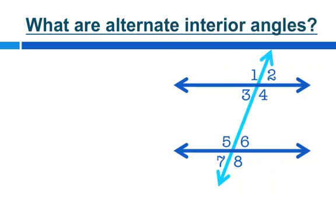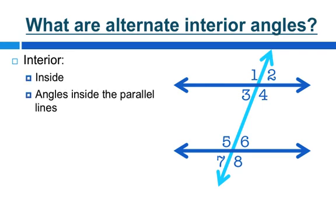So first of all, what are alternate interior angles? Let's break that down into different parts of the term. Interior simply means, in plain English, inside. So when we're talking about interior angles, we're talking about angles inside the parallel lines — those angles that are in between those parallel lines are interior angles.